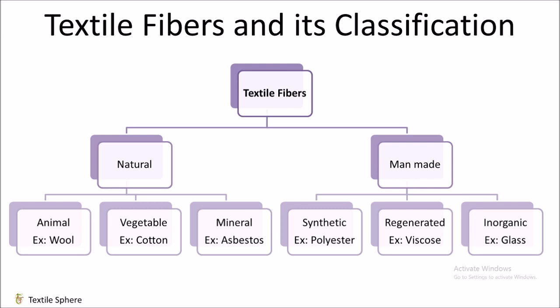The manmade fibers are further subgrouped as regenerated fibers, synthetic fibers and inorganic fiber. Regenerated fibers can also be classified based on cellulose and protein. We will discuss about the regenerated fiber viscose. Examples of synthetic fiber can be polyester, nylon etc. And an example of inorganic fiber is glass.